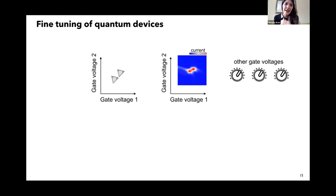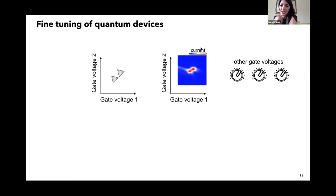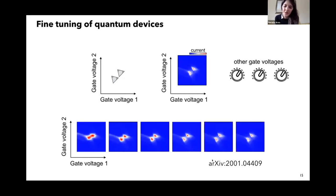Let me quickly show you a fine-tuning algorithm: once we are in these small islands of current, we need to get them right in order to operate the device. This is how the textbook triangles should look, and this is how they typically look in reality. You spend a lot of time changing the other gate voltages and different knobs so that these actually become nice textbook triangles. We created an algorithm to do that automatically. You can search for details in the archive. I hope I've shown you that there is a lot of potential — that these machine learning techniques can really help us scale quantum devices.